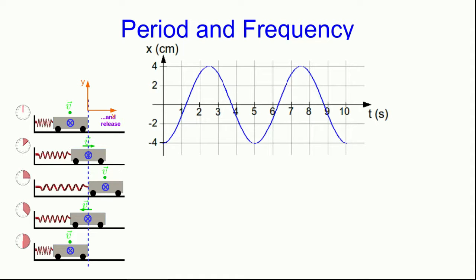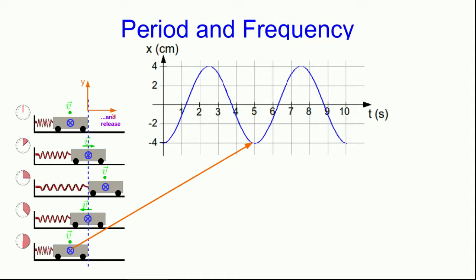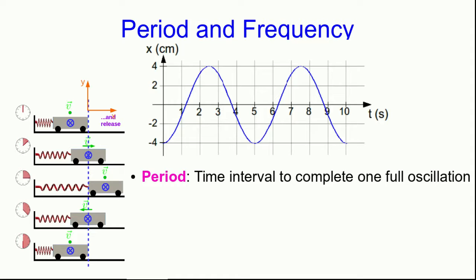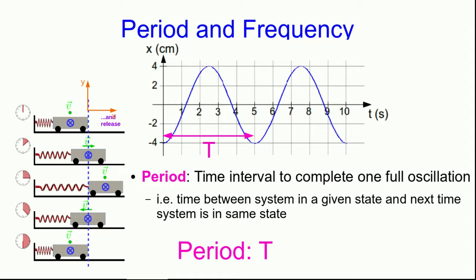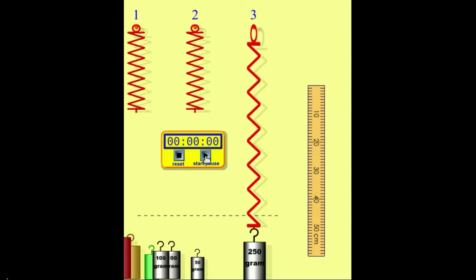Here's what a position versus time graph tends to look like for a mass on a spring. It's a function that probably ought to look pretty familiar to you, but more about that later. Notice that we can see the turning points: the left turning point of the cart on the spring, then passing through the equilibrium position, at the right turning point, back at the equilibrium position, and back at the left turning point. We define the period as the time interval to complete one oscillation. You can see on this graph that the period is five seconds — that's from the left turning point back to the left turning point. But it's actually the time between any time and the next time that the system is in the same state, so we could measure between the right turning points or anywhere else.